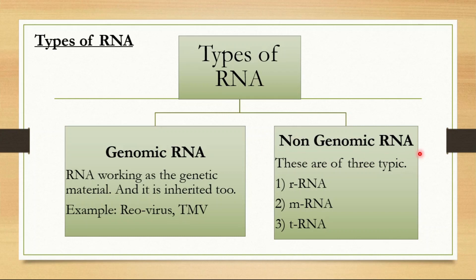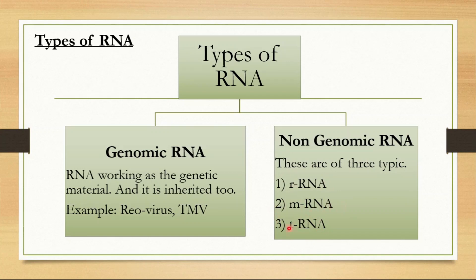Non-genomic RNA is not the genetic material of an organism — it exists in the cell but serves other roles. The main types of non-genomic RNA are: first, rRNA — ribosomal RNA; second, mRNA — messenger RNA; and third, tRNA — transfer RNA. We will now study each of them in detail.